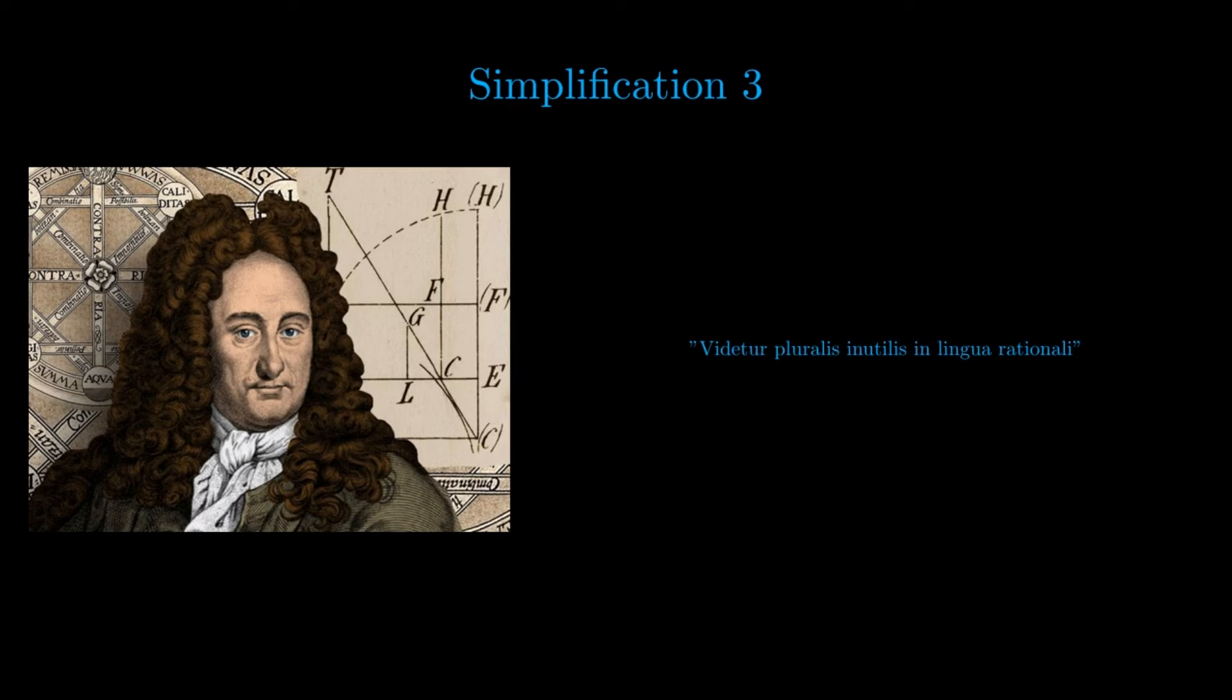The third simplification is that of number. Citing Leibniz: videtur pluralis inutilis in lingua rationali. Peano, using mathematics as an example, notes that the specification of the number of a noun is not necessary.